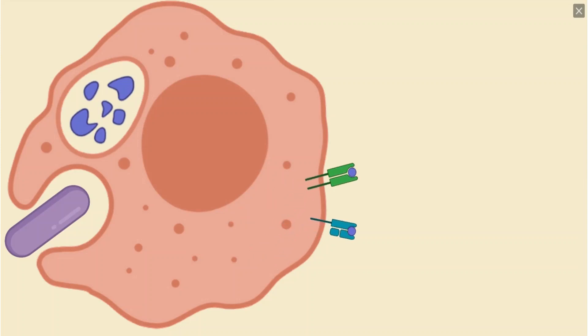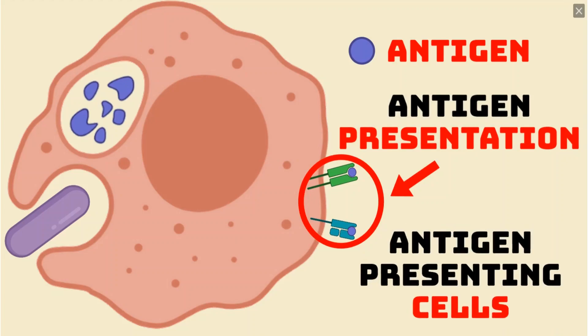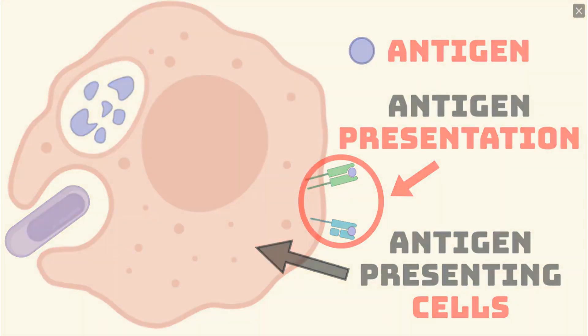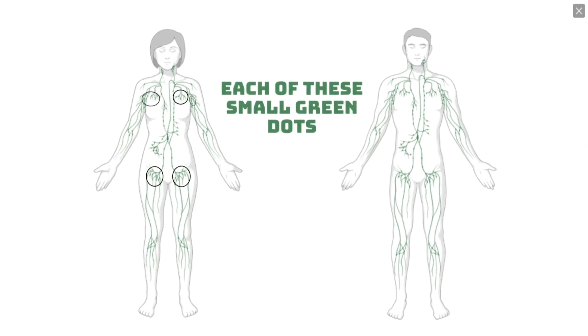We call any small fragment, piece, or part of a pathogen an antigen, and so this process is called antigen presentation, with the cells involved being named antigen-presenting cells. These cells then travel through the body to arrive at lymph nodes located all over our bodies.